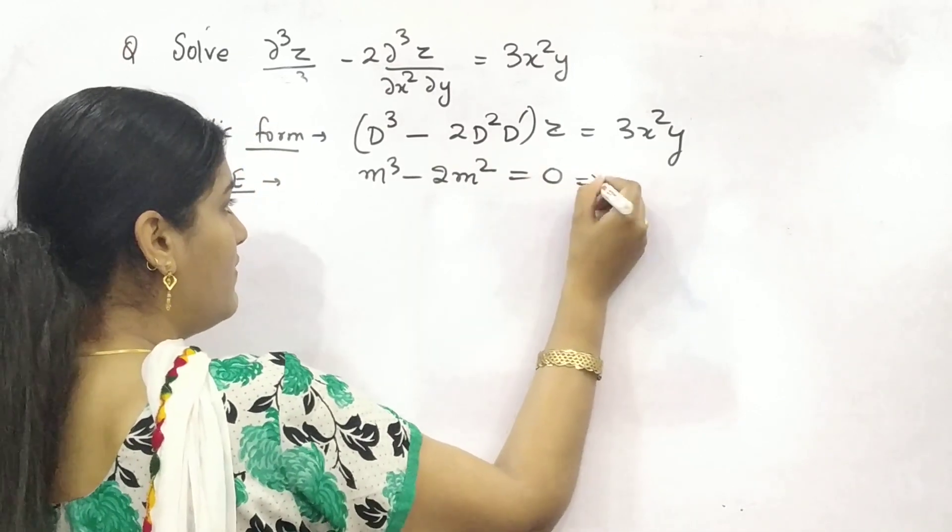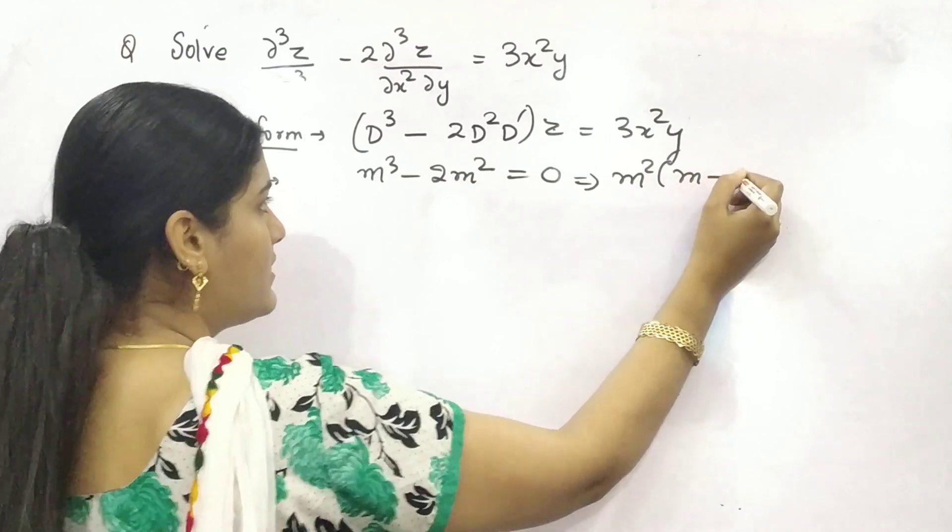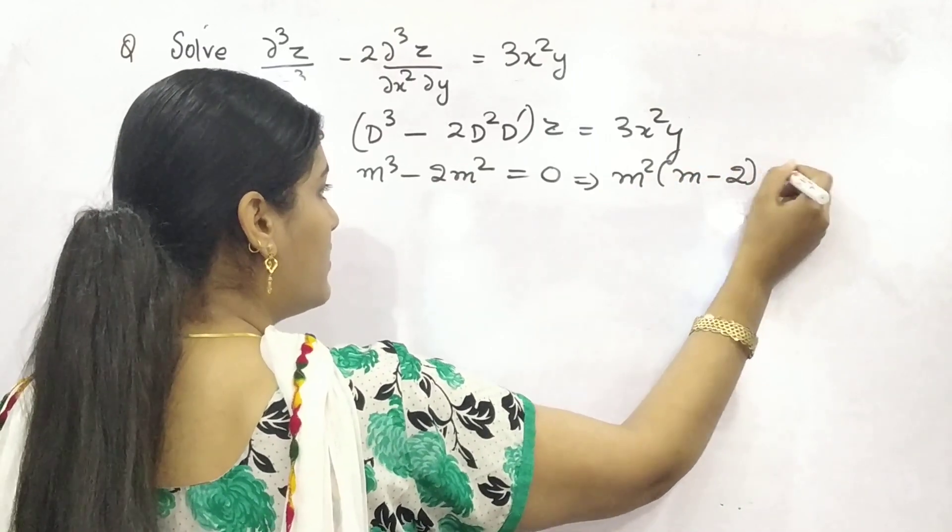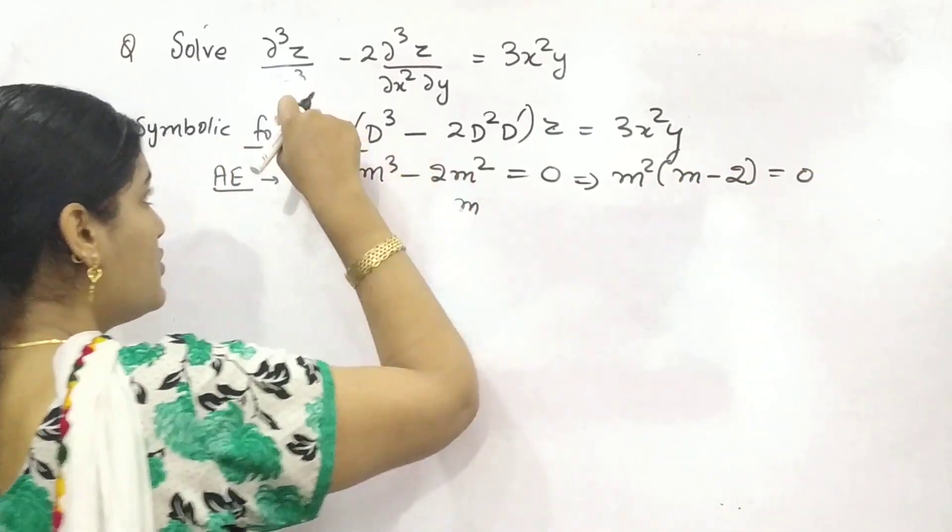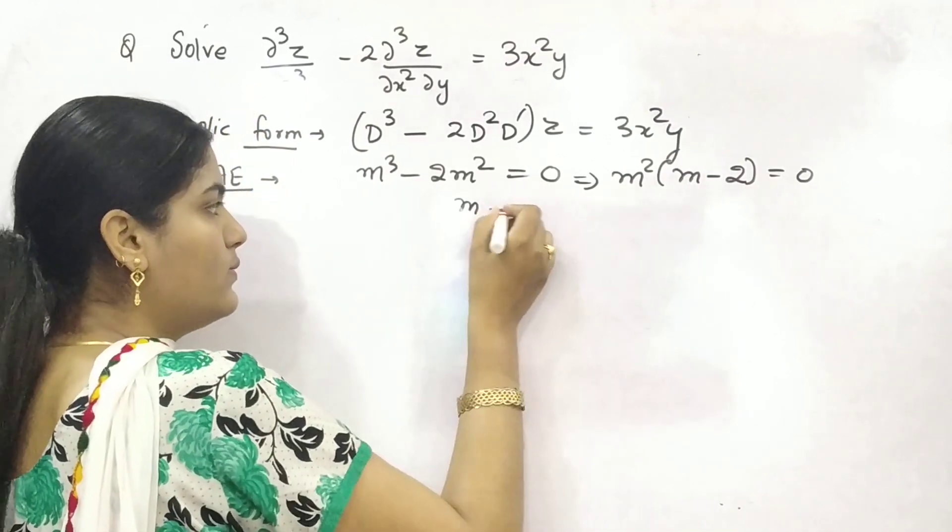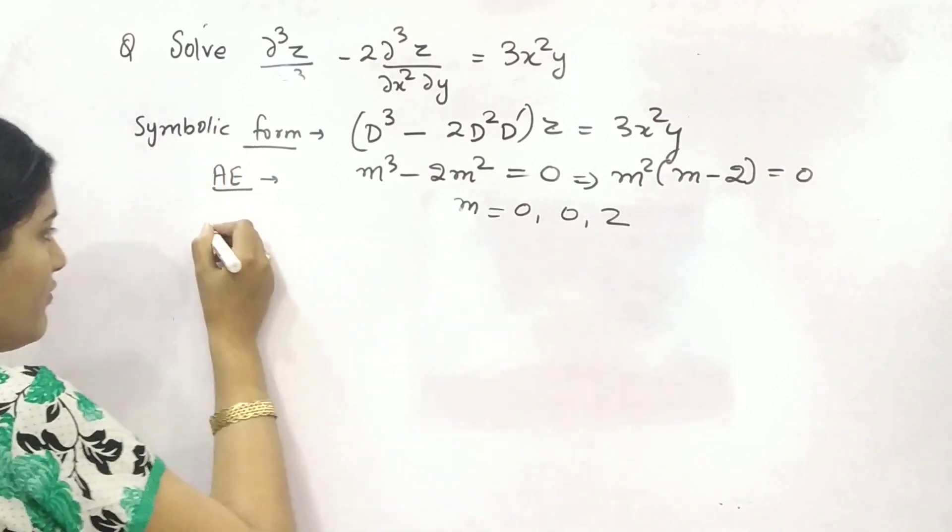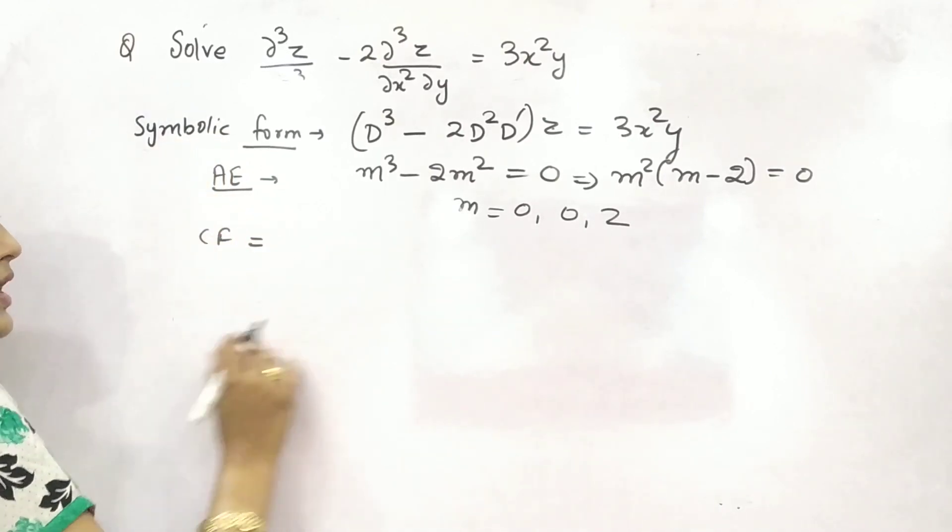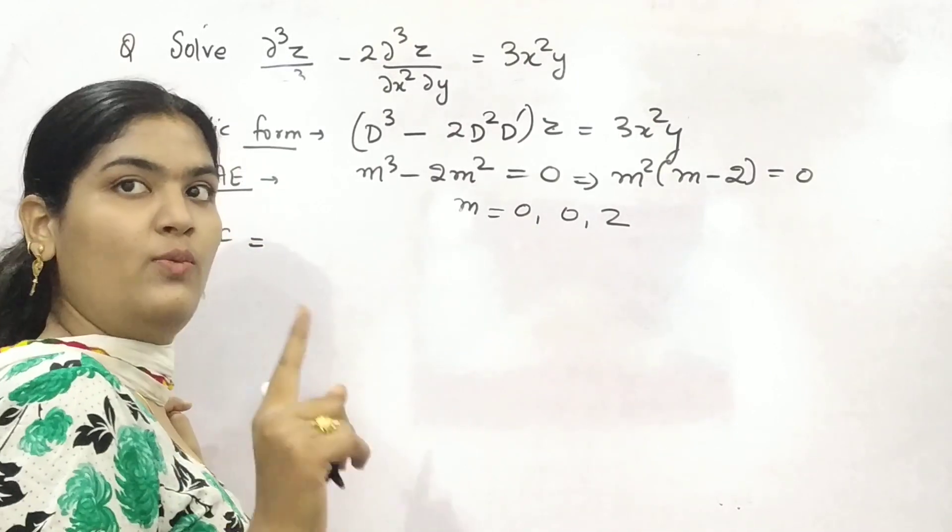If you solve it, you can take m² common. What is left? m - 2. So from here, because this is cubic, so you will get three roots: m as 0, 0 and 2. So what will be your complementary factor?